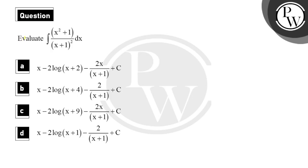Hello bachyo, let's read the question. The question says: evaluate the integration of (x² + 1) upon (x + 1)² dx. First option is x minus 2 log(x+2) minus 2x upon (x+1) plus c. Second option: x minus 2 log(x+4) minus 2 upon (x+1) plus c. Third: x minus 2 log(x+9) minus 2x upon (x+1) plus c. And fourth: x minus 2 log(x+1) minus 2/(x+1) plus c.